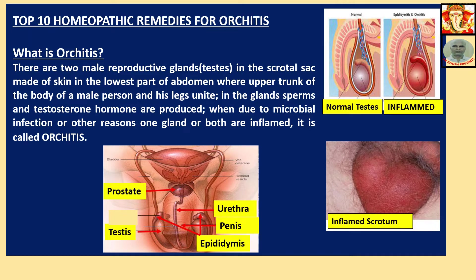What is Orchitis? There are two male reproductive glands called testis — singular testis, plural testes. And singular is also called testicle. In the scrotal sac made of skin, in the lowest part of the abdomen, where the upper trunk of the body of a male person and his legs unite, sperms and testosterone hormone are produced. When due to microbial infection or other reasons, one gland or both are inflamed, it is called Orchitis.